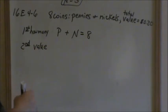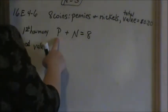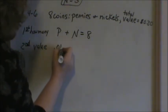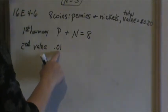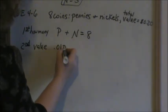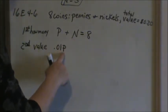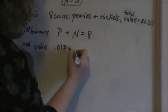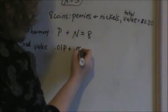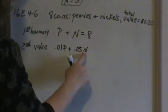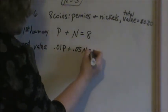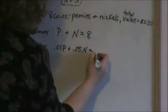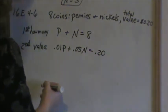My second equation is going to be the value. What is the value of a penny? One cent — be sure to write .01, that's how you write one cent. So one cent times however many pennies we have, and then five cents times the number of nickels we have. The problem told us the total amount of money we have is 20 cents.